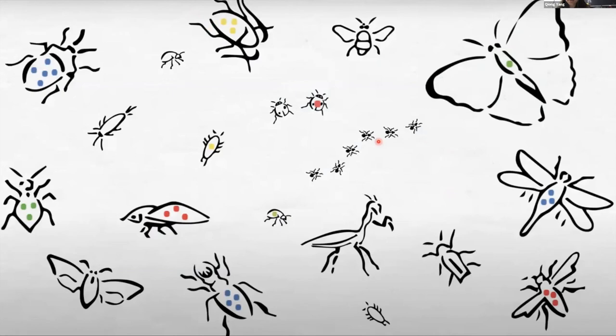Endosymbionts exist in many insect species. Each species is infected with different endosymbiont species or strains. Endosymbionts in insects exist in two forms: primary and secondary.